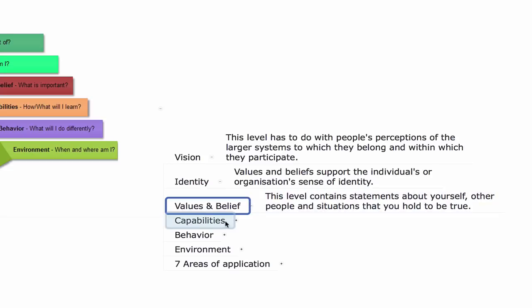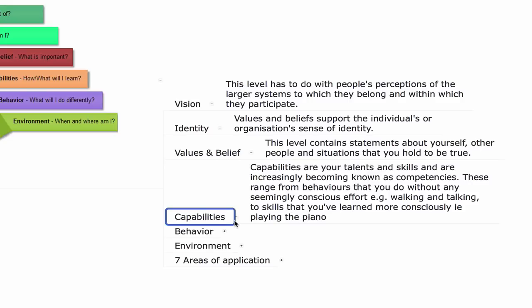Next is capabilities — skills, both conscious and unconscious. Unconscious skills are like walking: at one point you were learning it, and now you're unconsciously competent at it. Then there are more consciously developed capabilities. If you want to become an entrepreneur, some of the most important skills are direct response marketing, consultative selling, copywriting, public speaking, language, communication, and sales and marketing, which are very related.